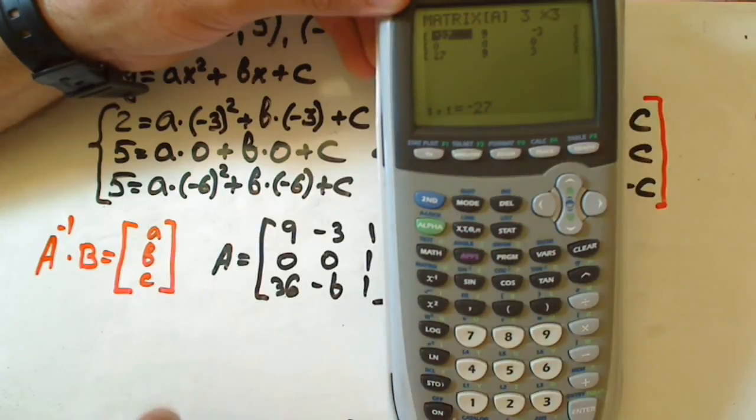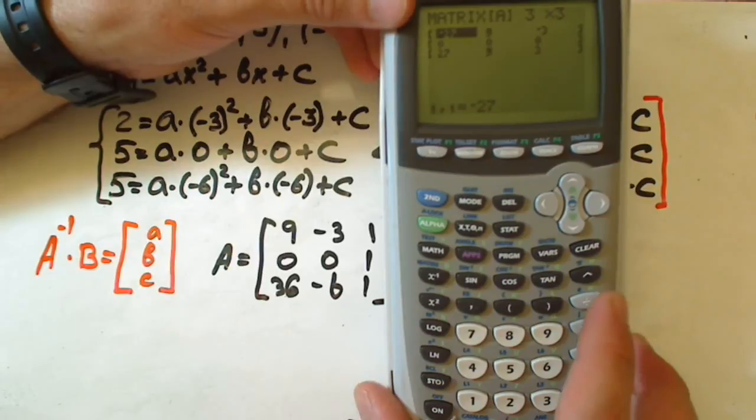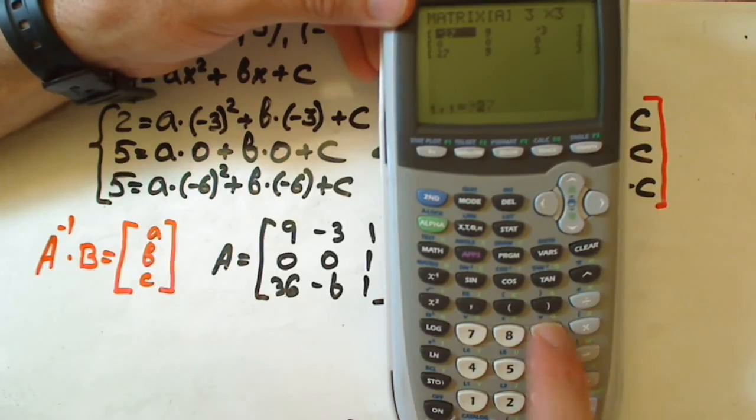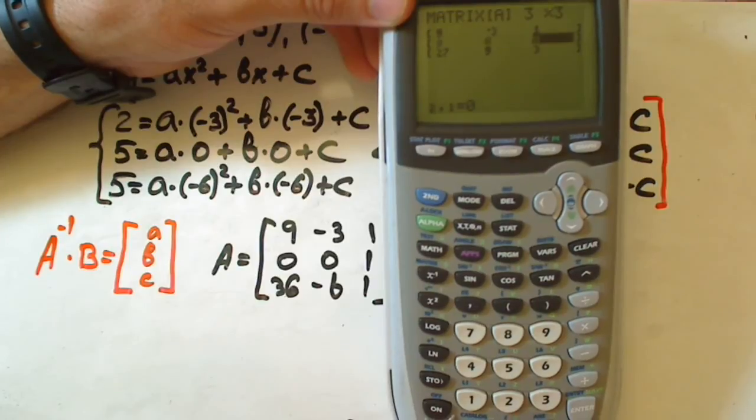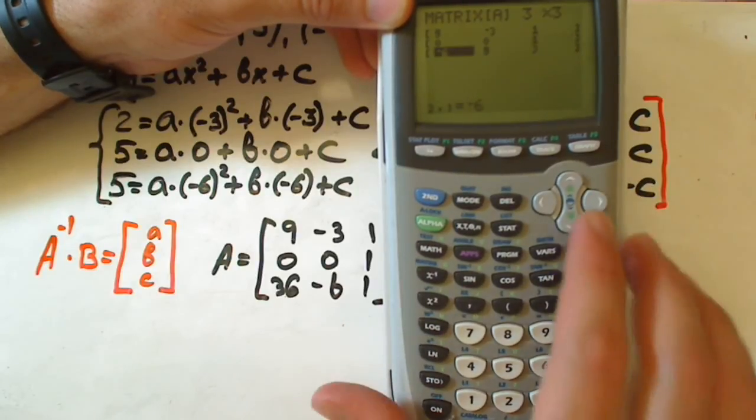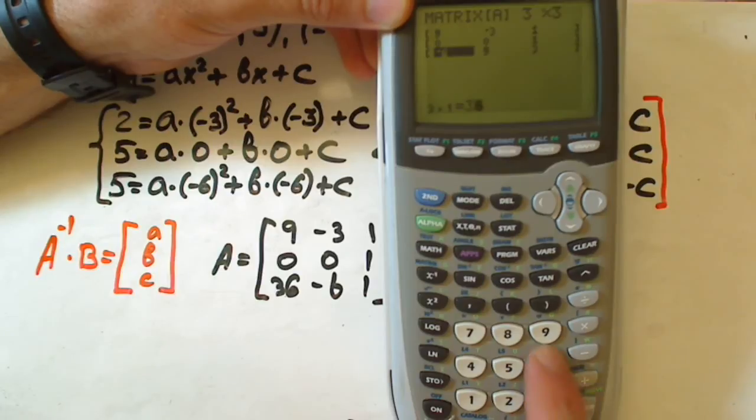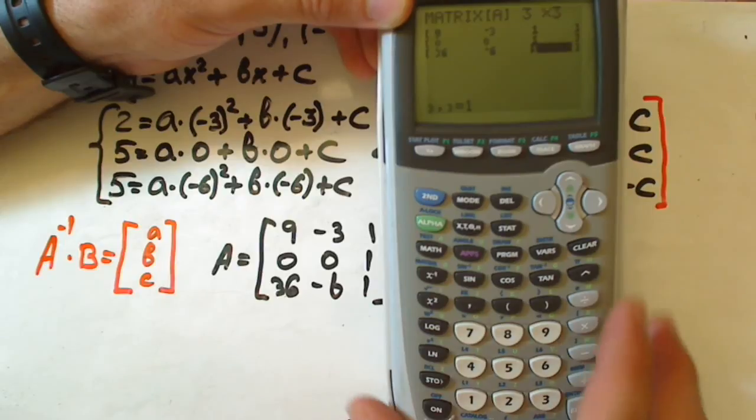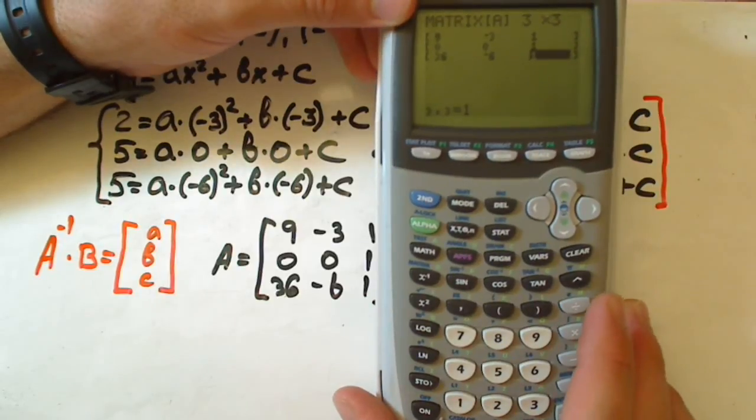Now our values in the matrix, we just plug in there: nine, negative three, one, zero, zero, one, thirty-six, negative six, one. Okay, our matrix a.